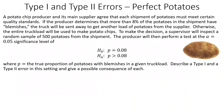Here's an example. A potato chip producer and its main supplier agreed that each shipment of potatoes must meet certain quality standards. If the producer determines that more than 8% of the potatoes in the shipment have blemishes, the truck will be sent away. Otherwise, the entire truckload will be used to make potato chips. A supervisor inspects a random sample of 500 potatoes, and the producer performs a test at alpha = 0.05. The null hypothesis is that the proportion of blemishes equals 8%; the alternative is that it's greater than 8%. Describe a Type 1 and Type 2 error in this setting and give a possible consequence of each.